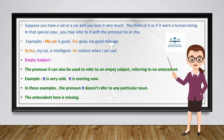We also use 'it' to refer to an empty subject — one that does not refer to any antecedent. For example: 'It is very cold.' 'It is evening.' In these sentences, 'it' does not refer to any particular noun. There is no antecedent; the antecedent is missing.